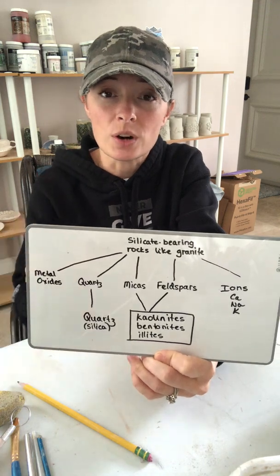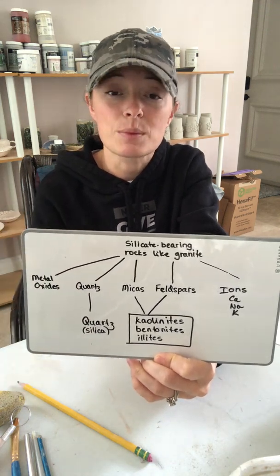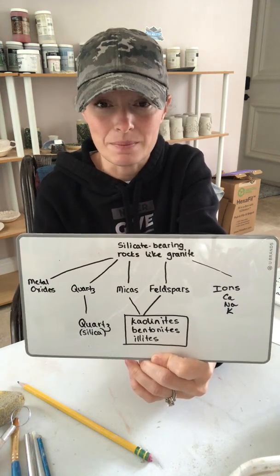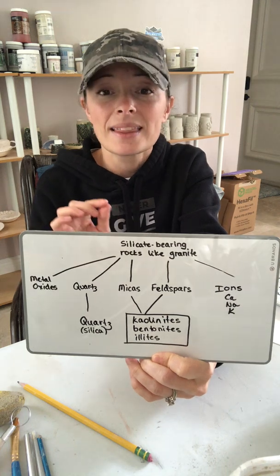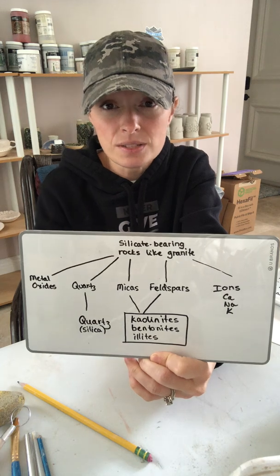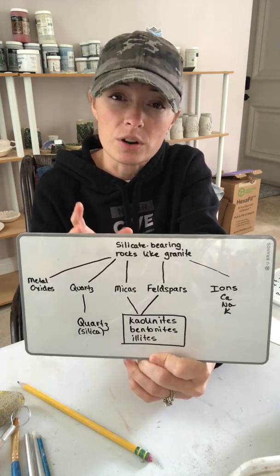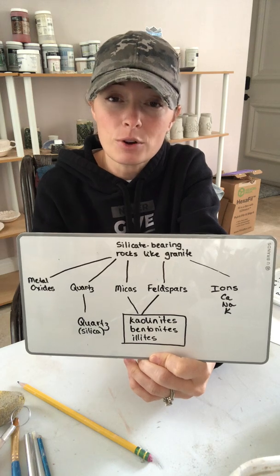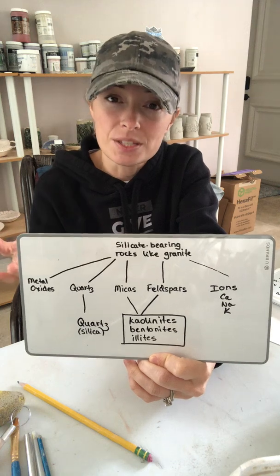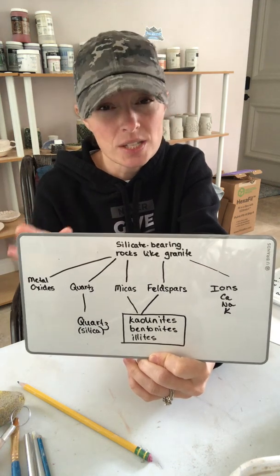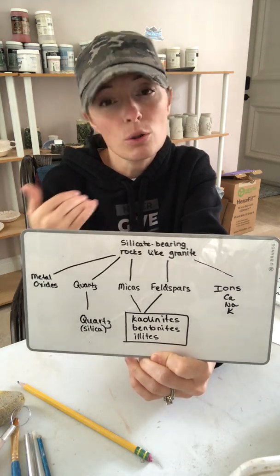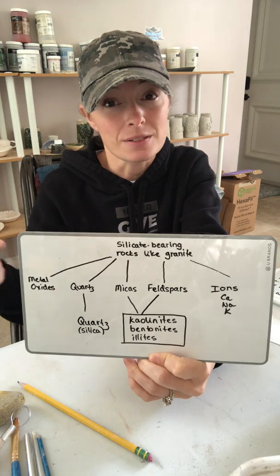Quartz pretty much stays quartz. Quartz and silica chemically are the same compound — the chemical formula is the same — however they're not the same physically. Quartz is a crystal form of silica. It's like ice and water: the chemical formula is the same but the actual thing is not, with very different physical properties. They're almost synonymous but keep in mind that the physical properties are different.